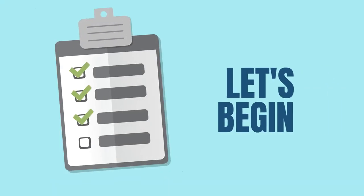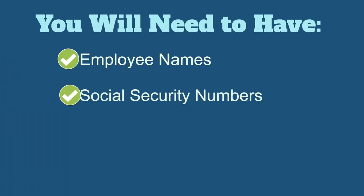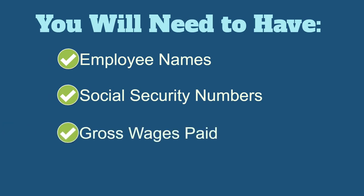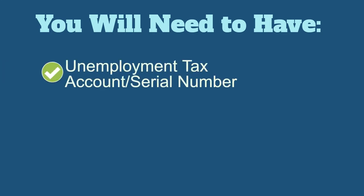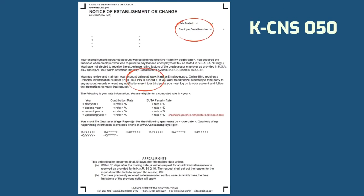Let's begin with the information that you'll need before starting the online filing process. You'll need to have all employees' names, social security numbers, and gross wages paid in the quarter you are filing. In addition, you will need your employer's unemployment tax account or serial number and four-digit PIN, which is located on your KCNS 050 Notice of Establishment Letter, first received when your unemployment tax account was set up.